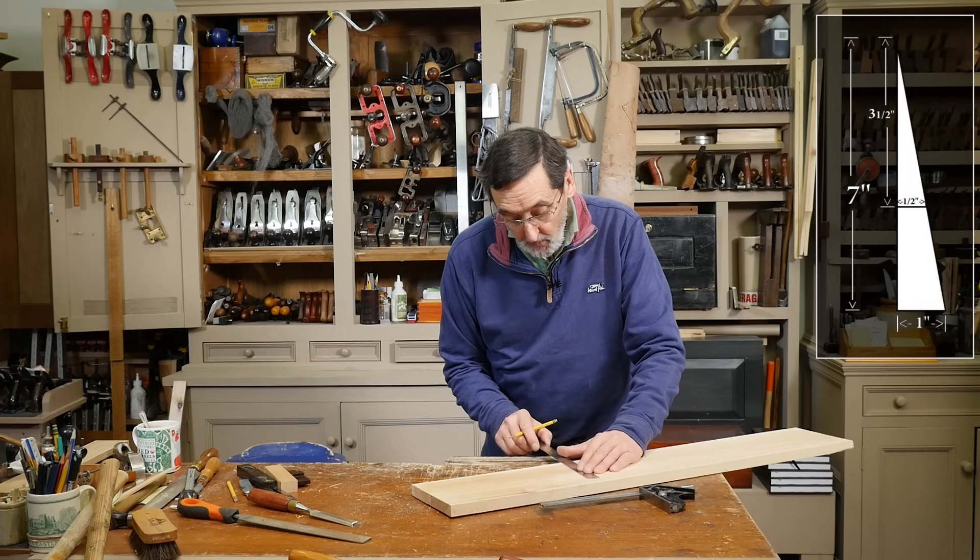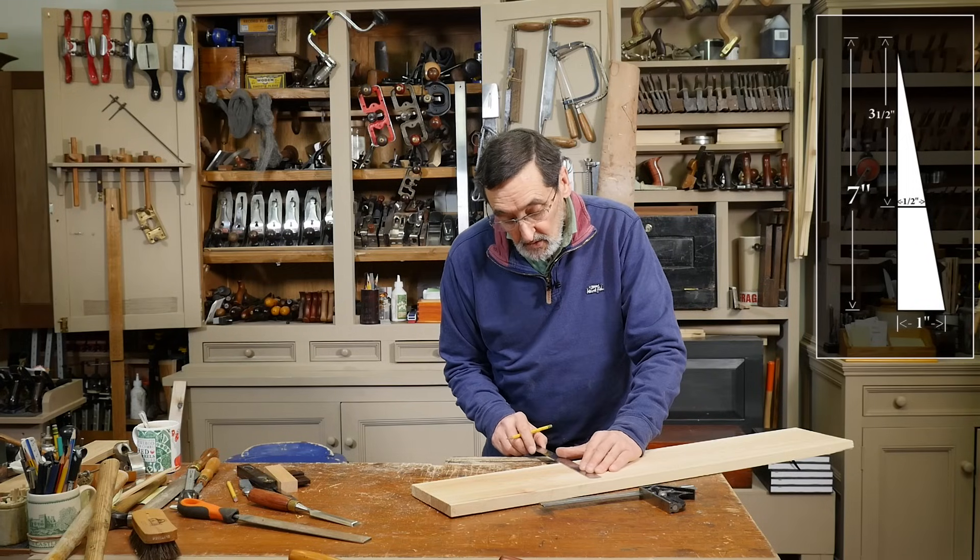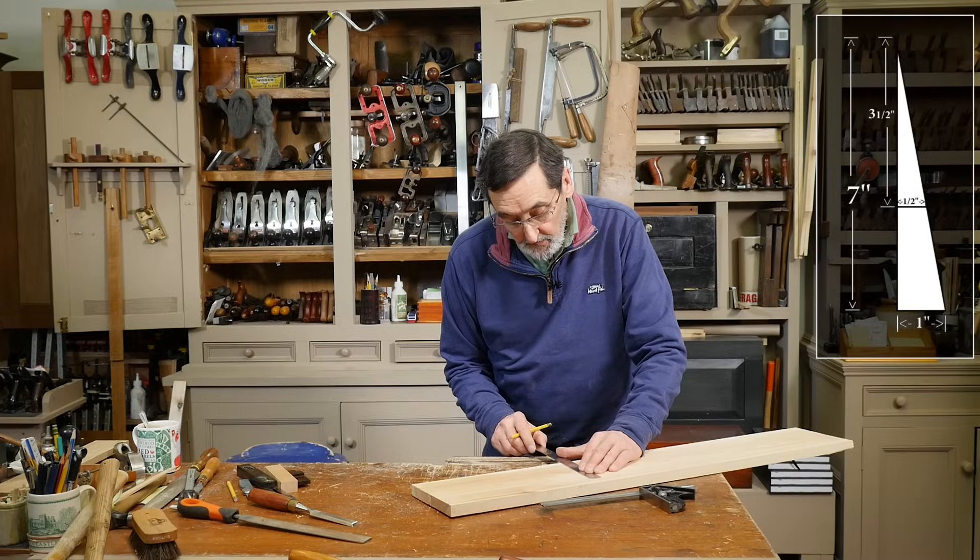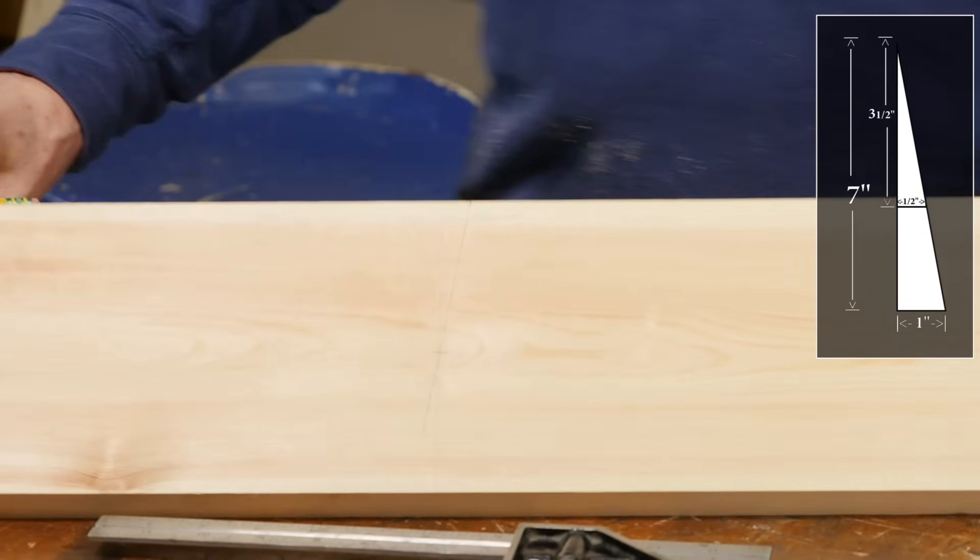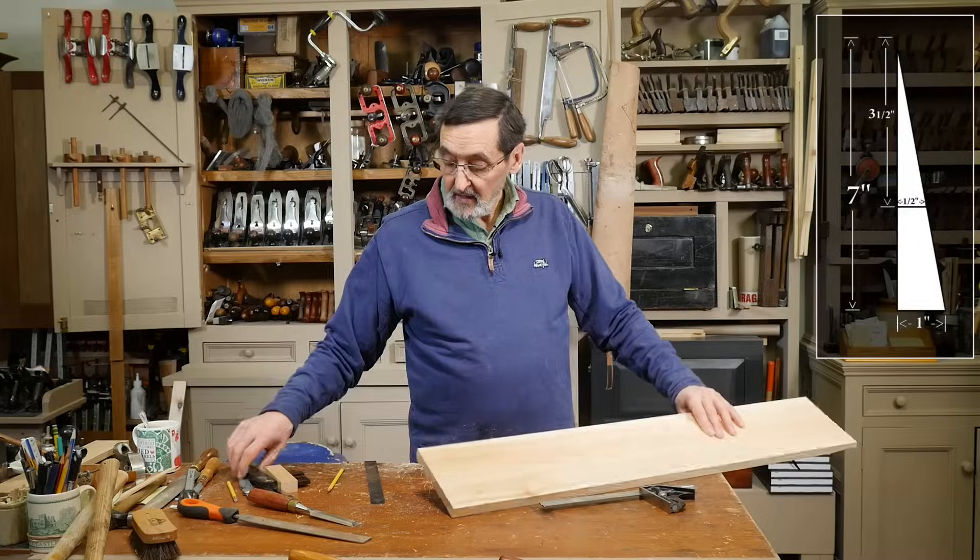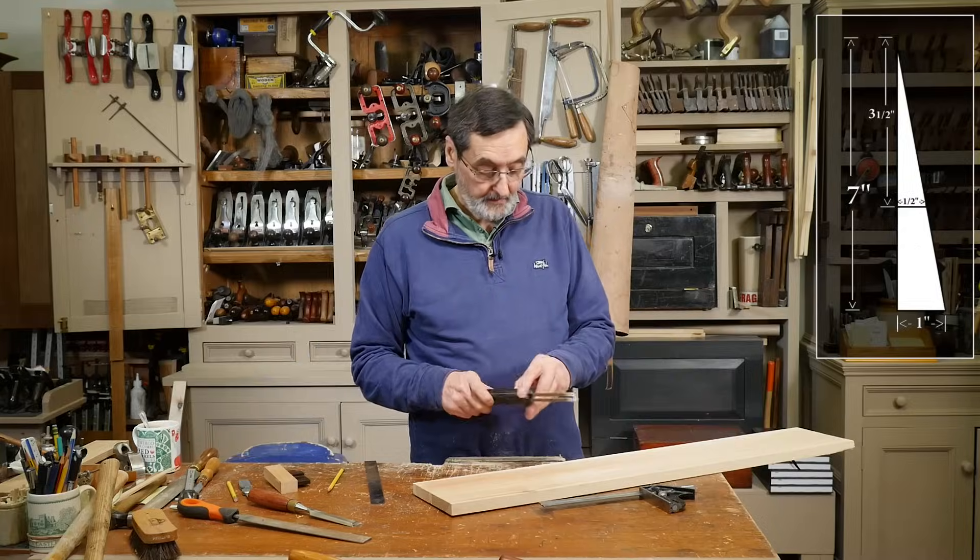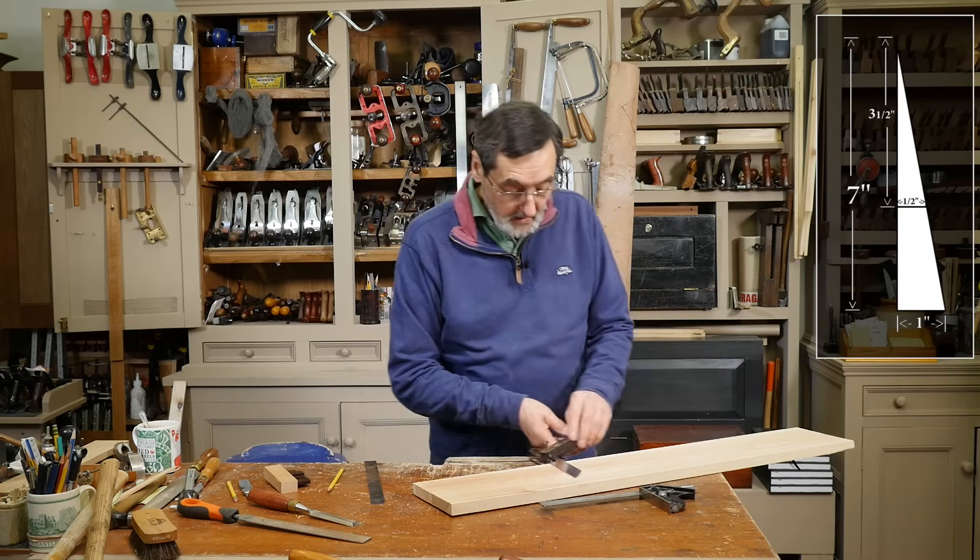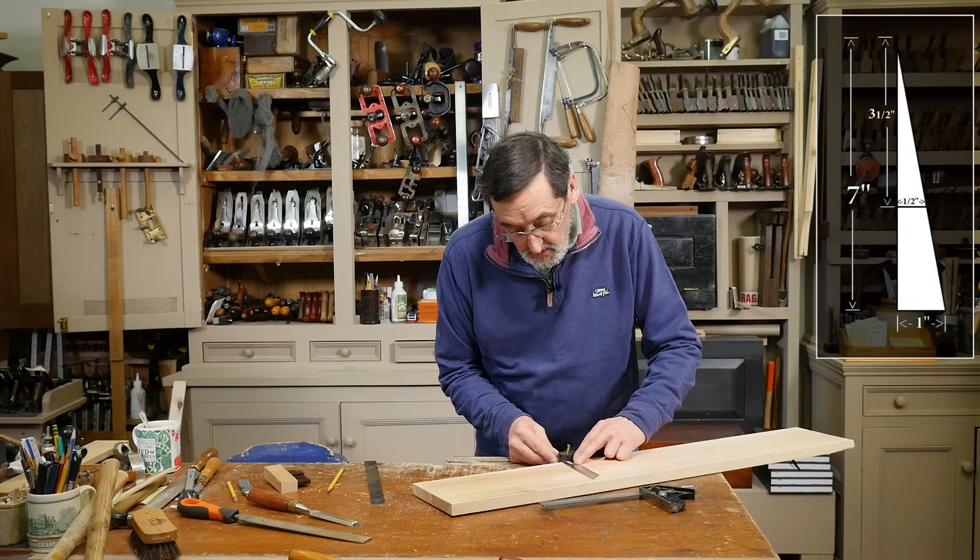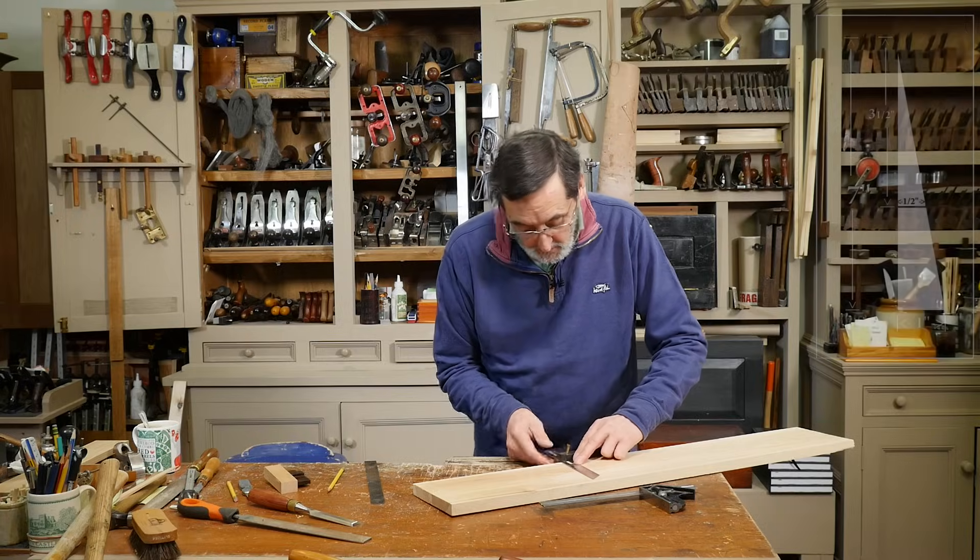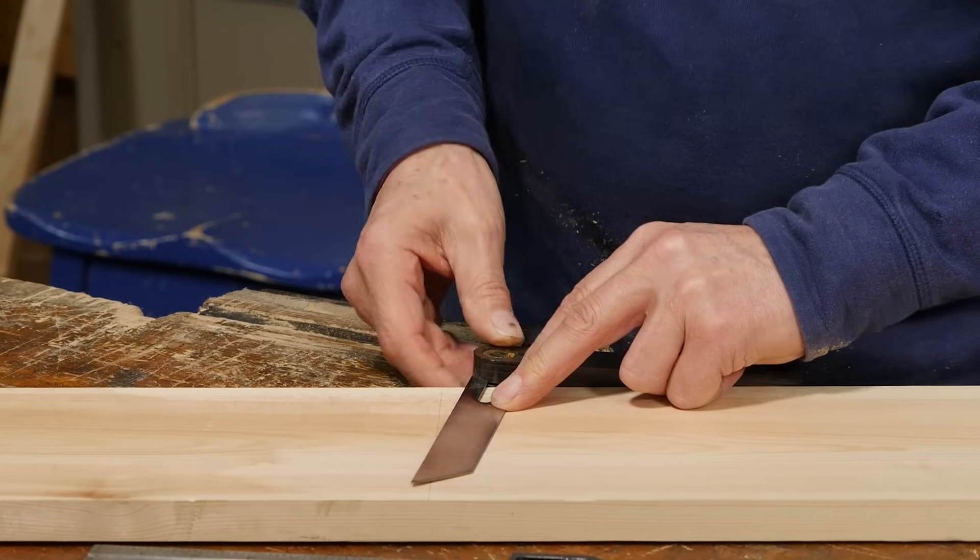Then I'm going to come across here half an inch from this one. That gives me the pitch that I want for a one in seven pitch, which is a ratio. This goes across here, so there I've got my one in seven. Then I take a sliding bevel and set this to that angle.